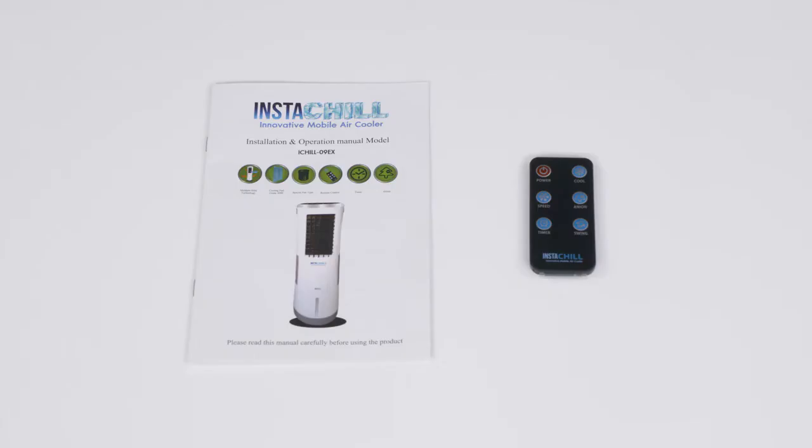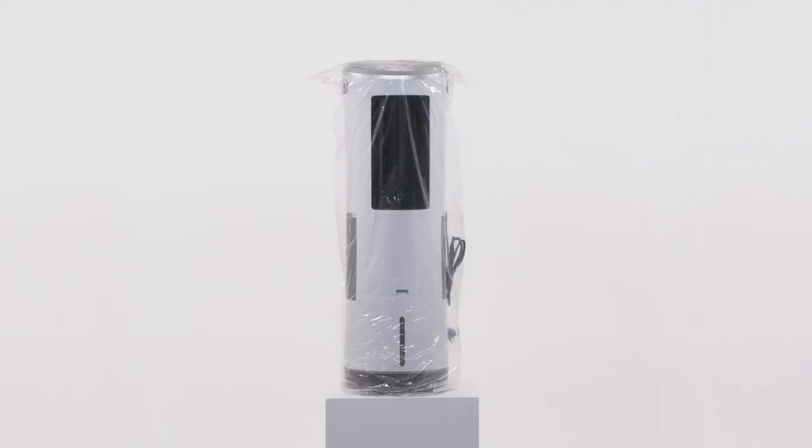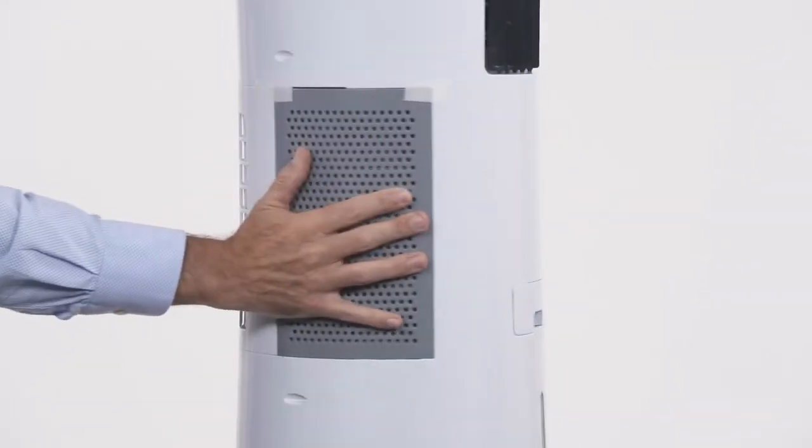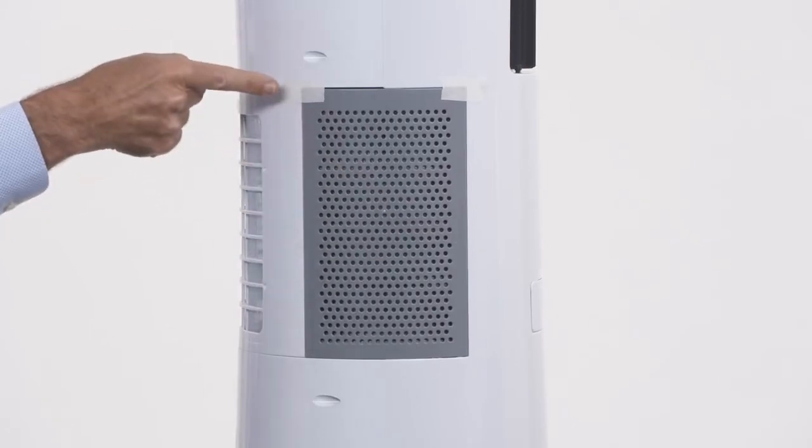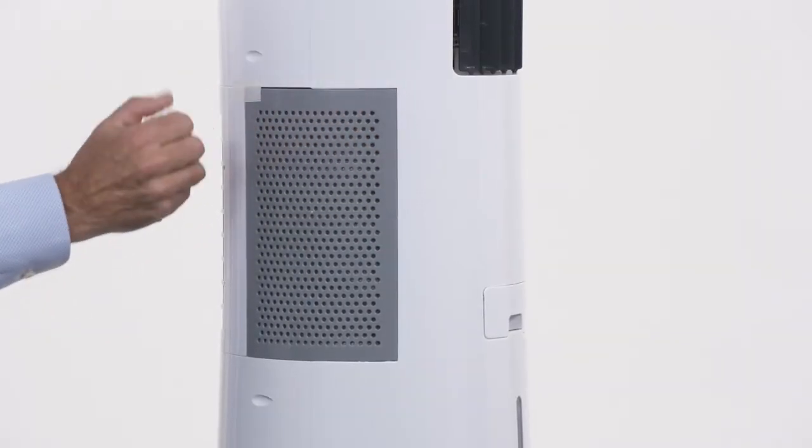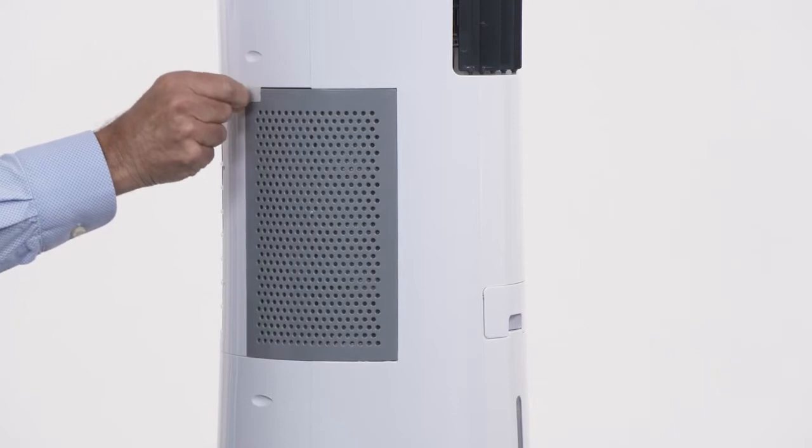When you open the box you will find a plastic bag containing the user manual and the remote. Your InstaChill 09EX comes completely assembled. The unit will be covered in a protective plastic sleeve and has four pieces of tape securing the panels. These are only to protect the InstaChill during transport and can be safely disposed of.